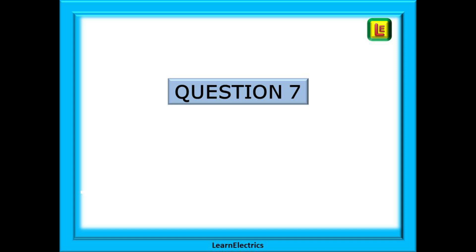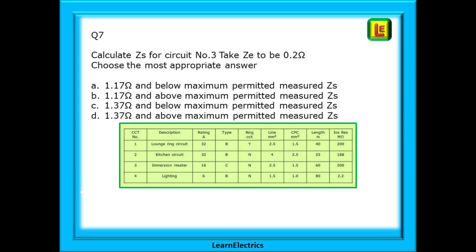Let's move on to question 7. This time we must calculate ZS for circuit number 3 and choose the most appropriate answer. We are told again that ZE is 0.2 ohms. Pause the video and do the calculation.